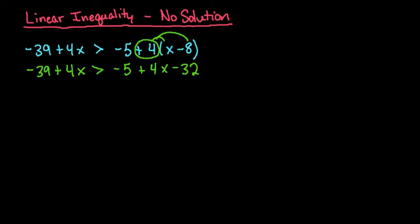And then what we need to do is simplify both sides. So I have negative thirty-nine plus four x is greater than, and I'm going to add these two together. Since they're both negatives, we add them and we keep the sign. So we would have four x minus thirty-seven.